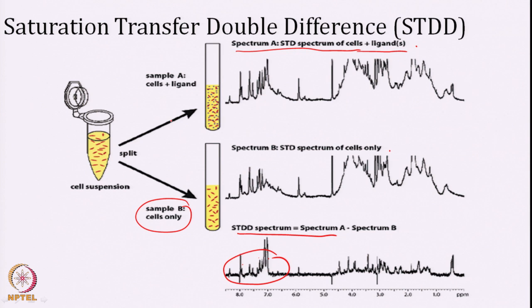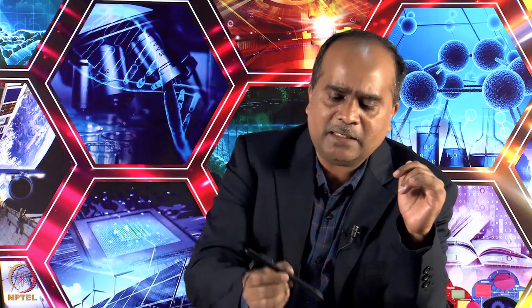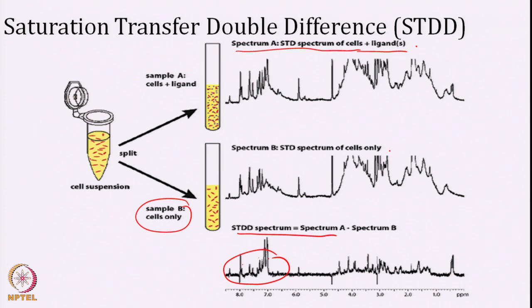To summarize this technique: our target is a ligand for the receptor on the cell surface. We take the whole cell suspension, divide it into two - one with only cells, one with cells plus ligand. We do two STD experiments, one for each sample, then subtract them. If we get a signal in the double difference spectrum, we identify that this suspension has a ligand which is actually binding to the receptor. We can then record the ligand spectrum and find out which atoms are involved in the interaction - that is the binding mode from STDD.